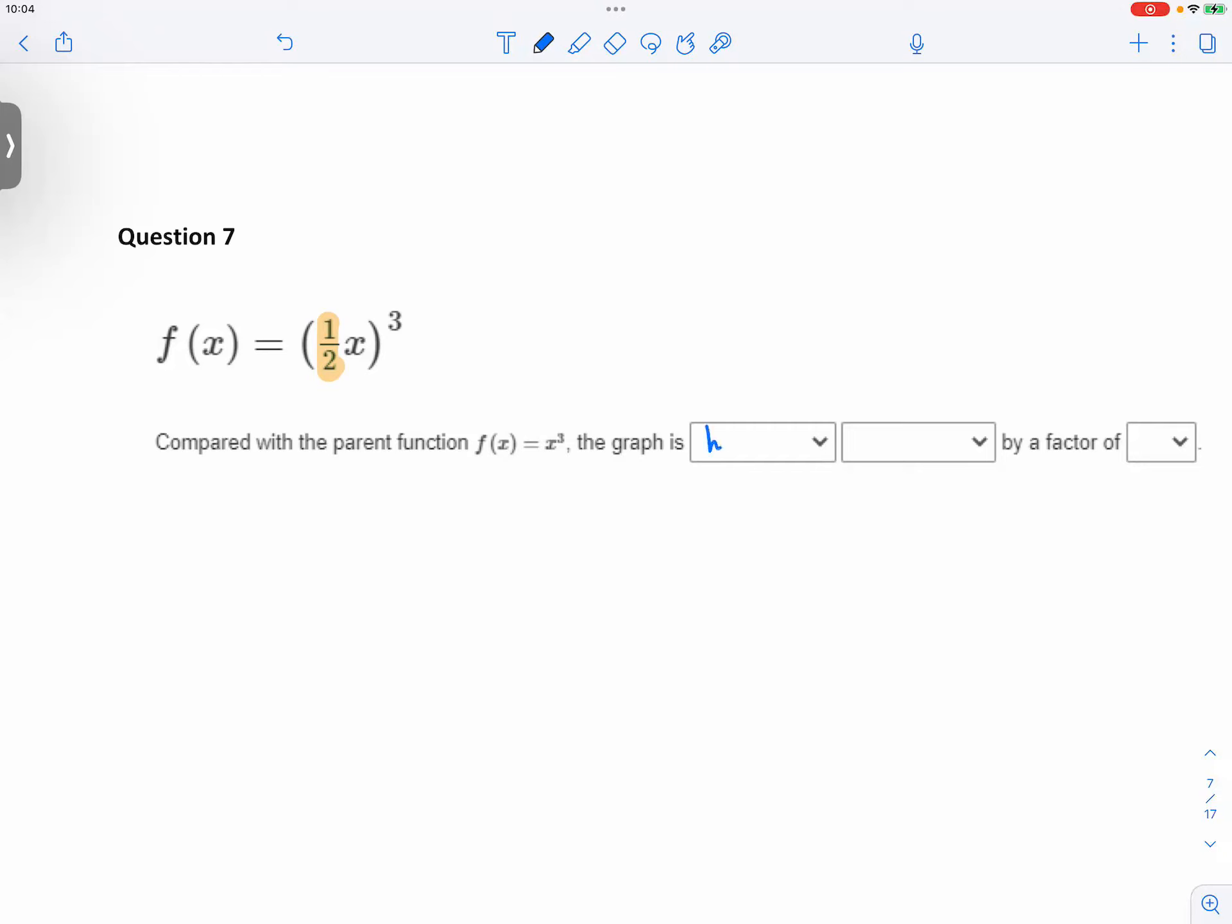So this would be a horizontal, since it's a b-value. And again, we know it's a b-value because it's happening right next to the x inside the parentheses.